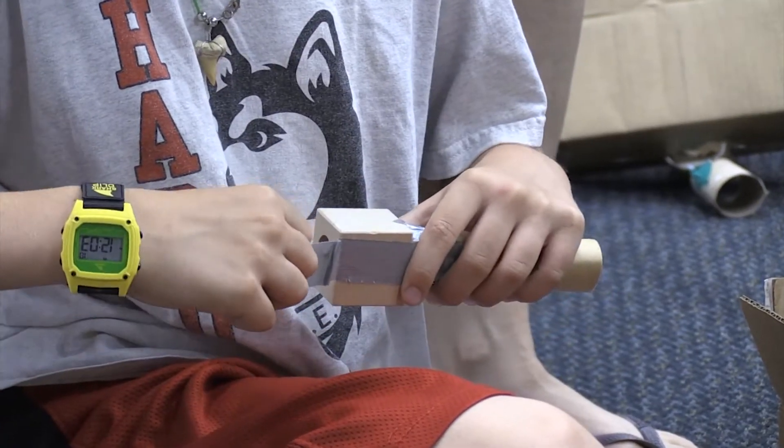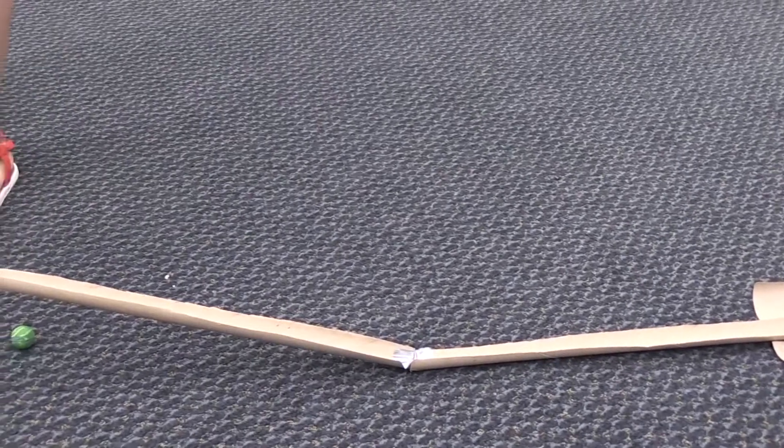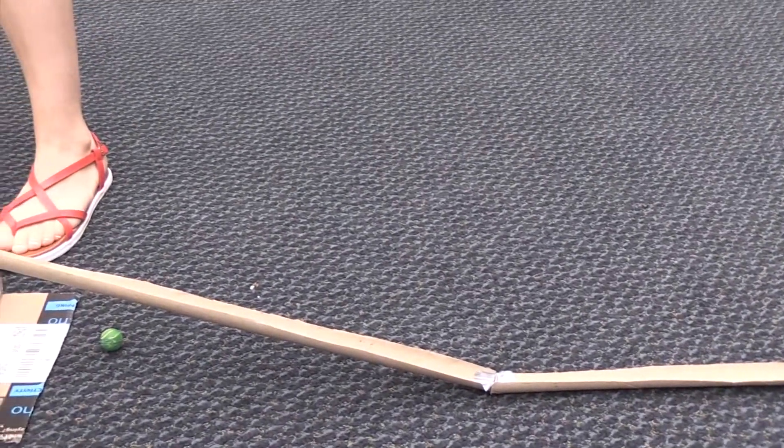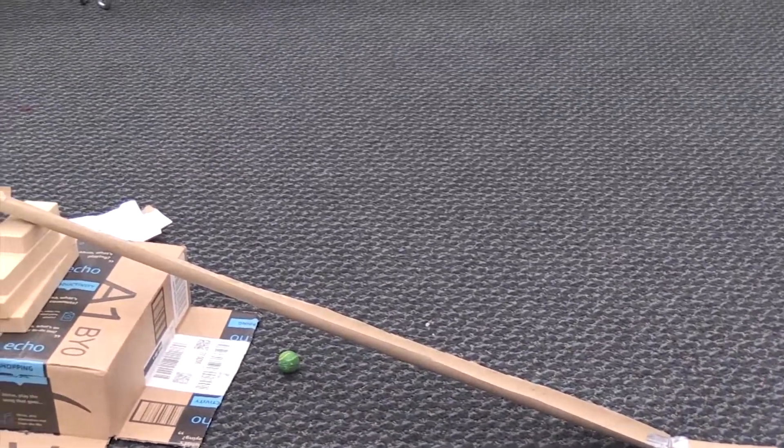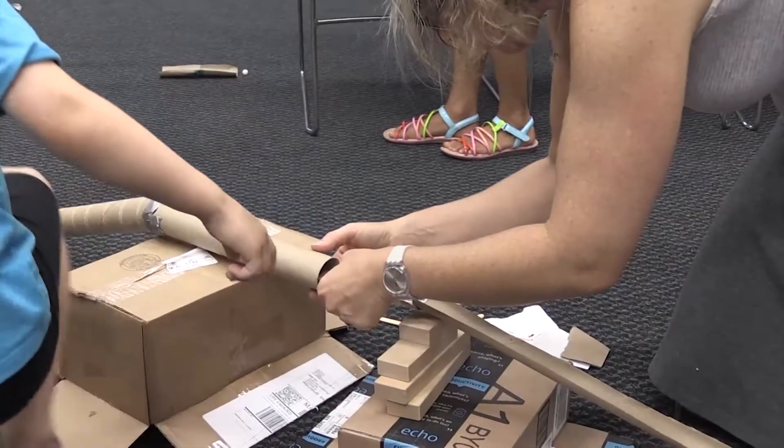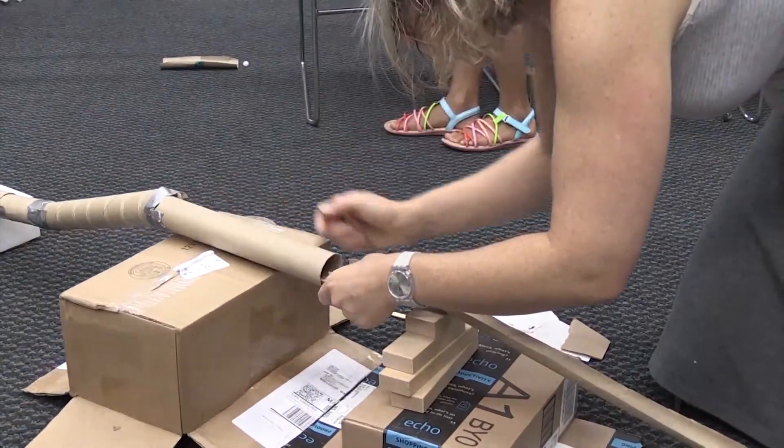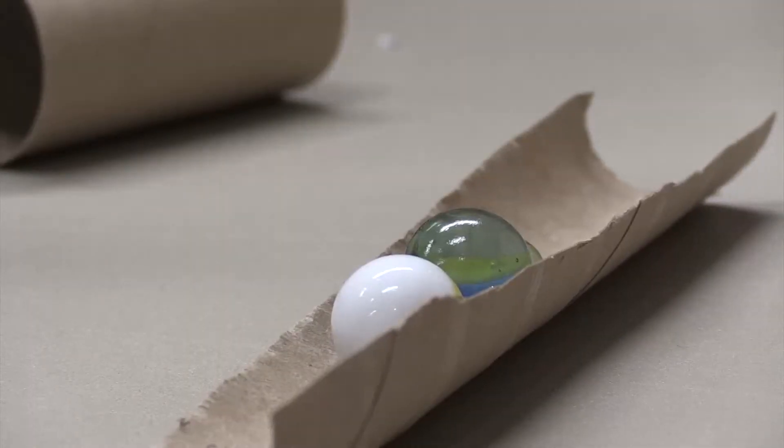Today we ran a program building your own homemade marble run. A marble run is like a slope that a marble can come down. You can build it out of all kinds of things or buy a kit, but we made them out of cardboard, tubes, and blocks, and kids could create their own, whatever they wanted.